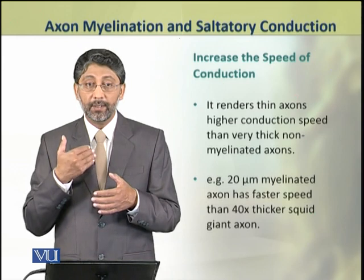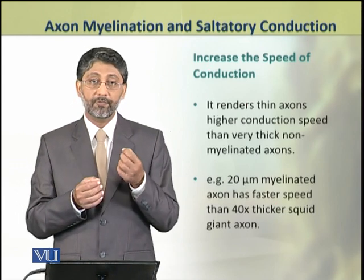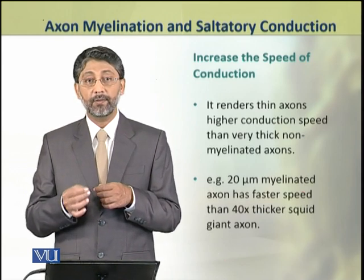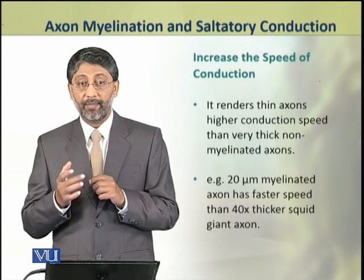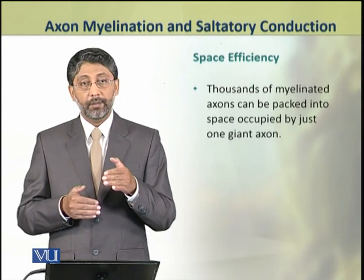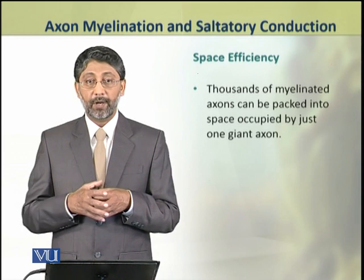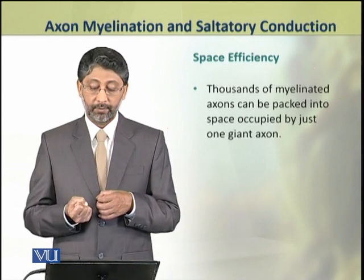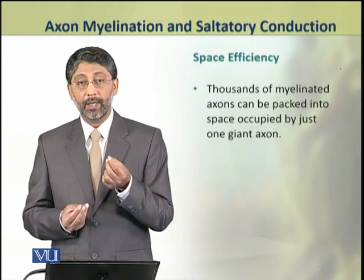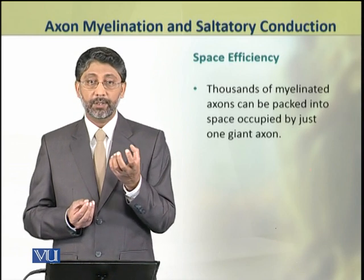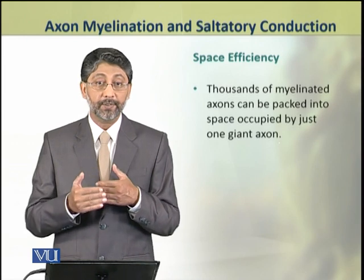For example, if we look at a vertebrate myelinated axon which is merely 20 micrometers thin, the speed of conduction of the nerve impulse is almost 800 times that of a squid giant axon. The third function of myelin sheath is to provide space efficiency, because thousands of myelinated axons can be packed into the same space that is taken by one giant axon of the squid. This means myelination provides significant space efficiency.